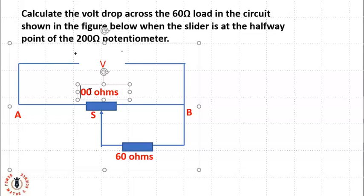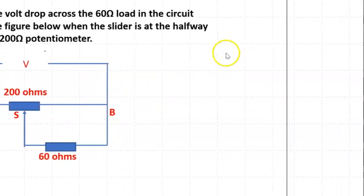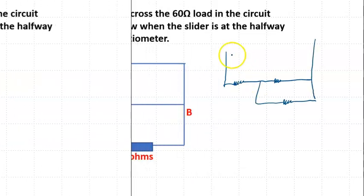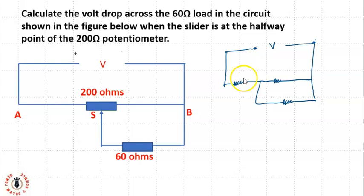Let's redraw this. If I'm to redraw this potentiometer, I will redraw it this way. So this is V, my source. I'm going to split this because the question says it's halfway, so the 200 ohms will become 100 ohms and 100 ohms with the 60 ohms in here.